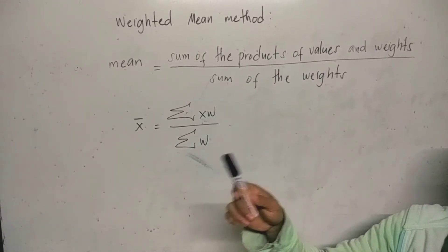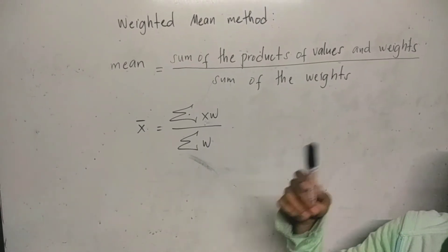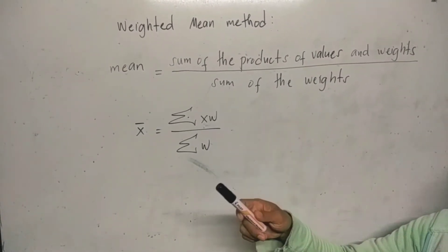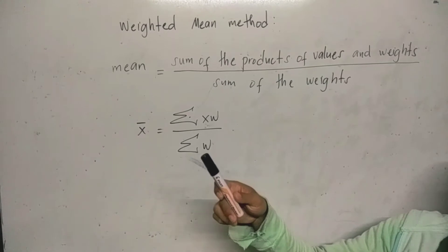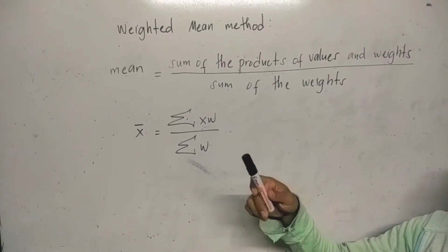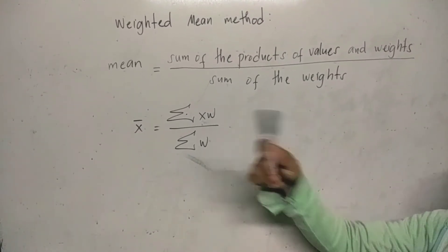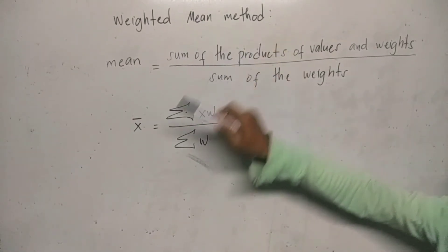We already know that the mean is the most common measure of center tendency. So in computing the mean for ungrouped data, one of the methods is this one, weighted mean method.